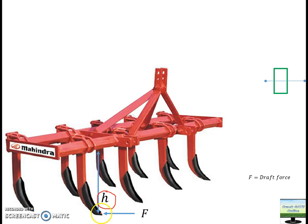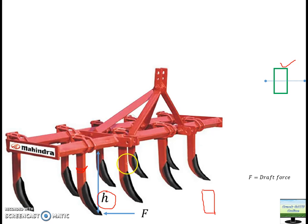If this is the draft force and this is your shank, you will now look at the cross-section area of the shank. If you draw this cross section, you will see it looks like this — as shown here. This is the thickness of your shank, and this is the width of your shank. So B is the thickness and D is the width or depth.